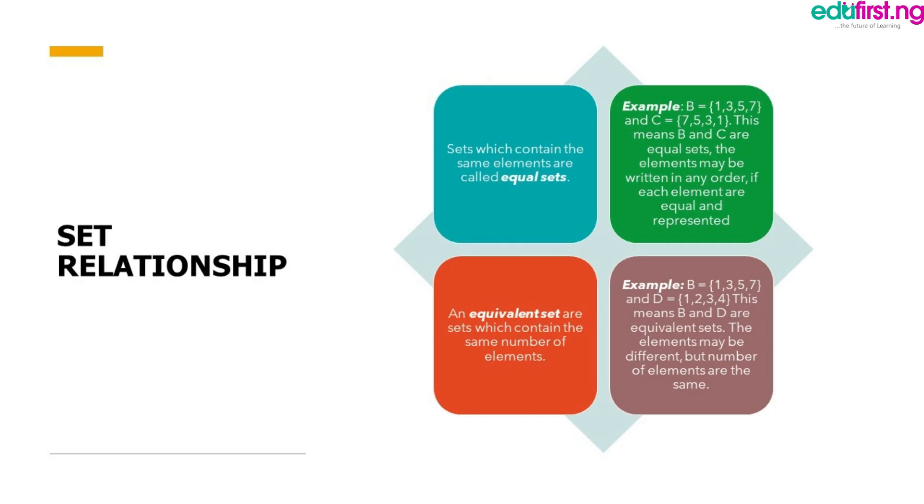Sets relationship. Sets which contain exactly the same elements are called equal sets. For example, we have B equals 1, 3, 5, 7 and C equals 7, 5, 3, 1. This means B and C are equal sets. The elements may be written in any order as long as each element is represented.